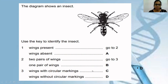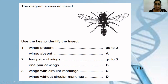In the second case: two pairs of wings — go to three; one pair of wings — go to B. If we look, how many pairs of wings are there? Two pairs of wings are there, so B is also wrong. You have to go to choice number three. In three: wings with circular markings — answer is C; and wings without circular markings — answer is D. If we look at the wings carefully, yes there are some markings, but these markings are not circular in shape — they are mostly rectangular or irregular in shape. So as the wings do not have circular markings, the correct answer is D.